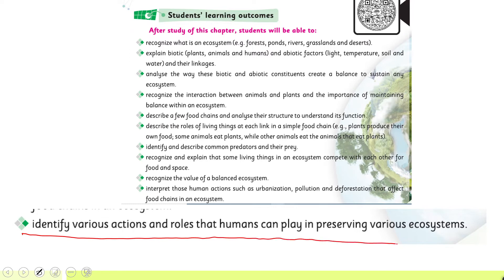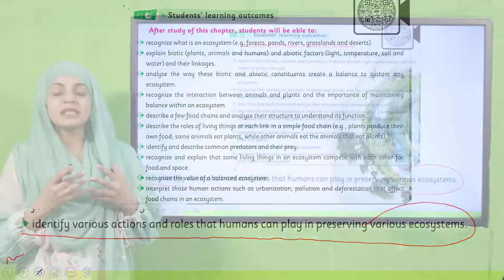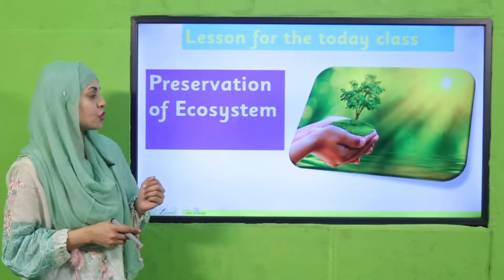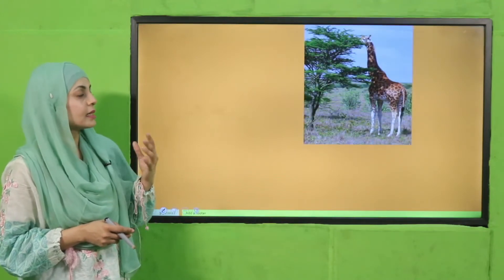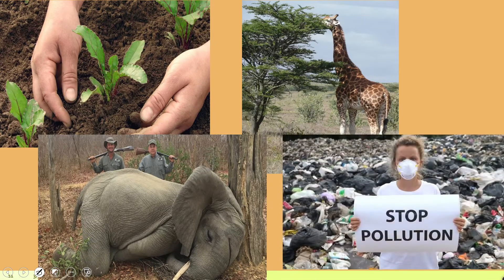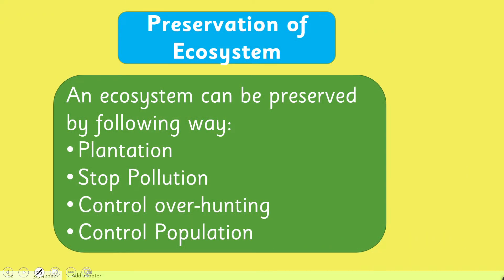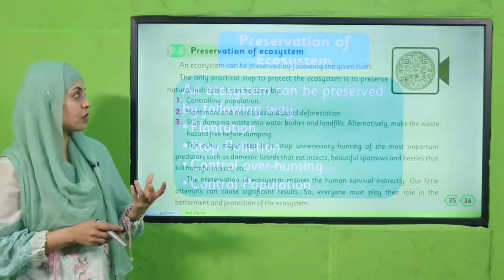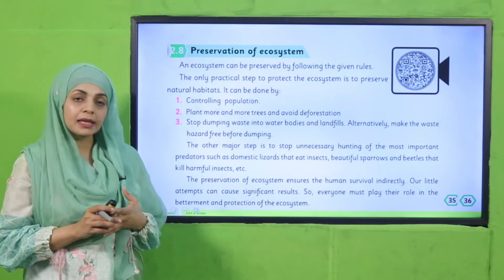Today the students will be able to identify various actions and roles that humans play in preserving various ecosystems. Our activities greatly affect the ecosystem, and there are methods that human beings can adopt to preserve the ecosystem. Today's lesson is the preservation of ecosystem. Different animals and plants live in natural ecosystems together. We must not hunt animals and must not cut down trees. The ecosystem can be preserved by: planting more trees, stopping pollution, controlling over-hunting, and controlling population.